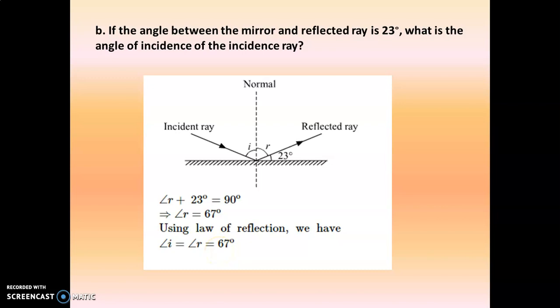I hope these sums are clear to you. You can solve them in your notebook — they are easy. You just have to remember the laws of reflection. The key principle is that the big angle the mirror makes with the normal is made up of two small angles, so when one angle is given, by subtraction we can find the other angle. I hope it is clear to everyone. Thank you very much.